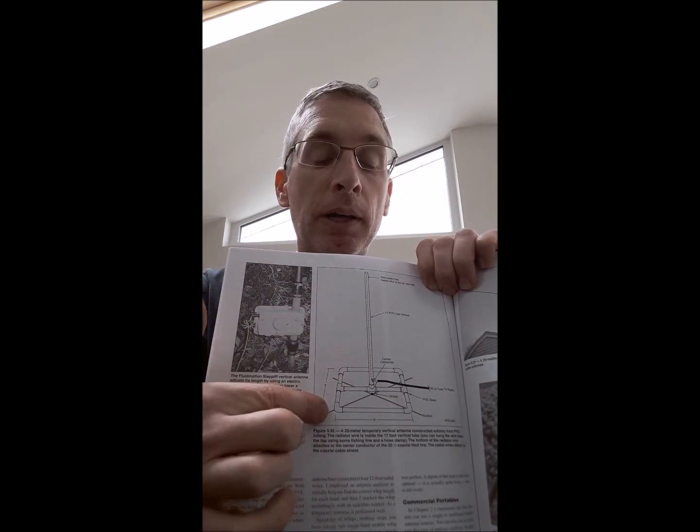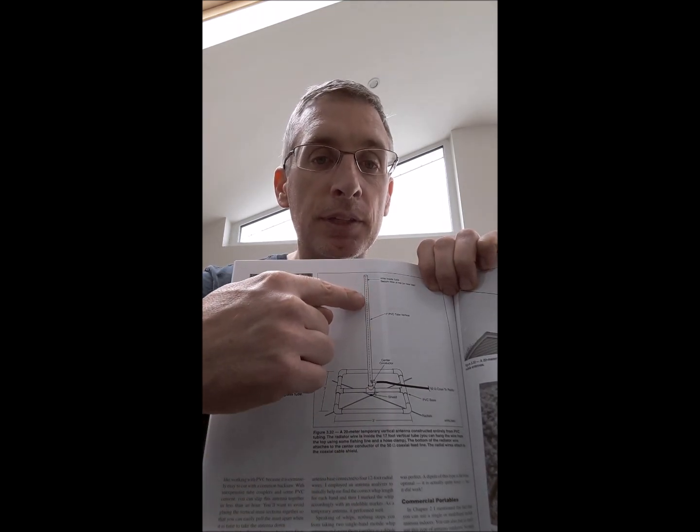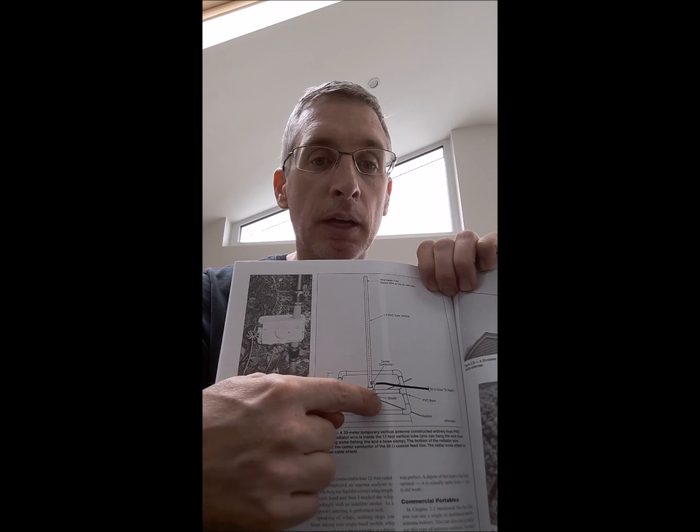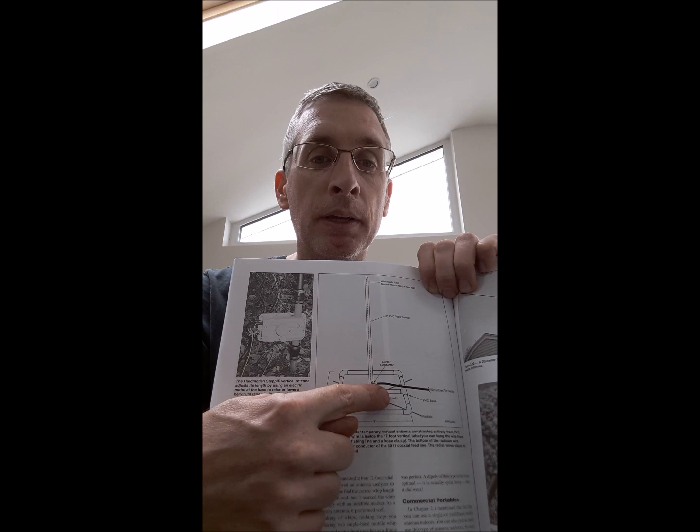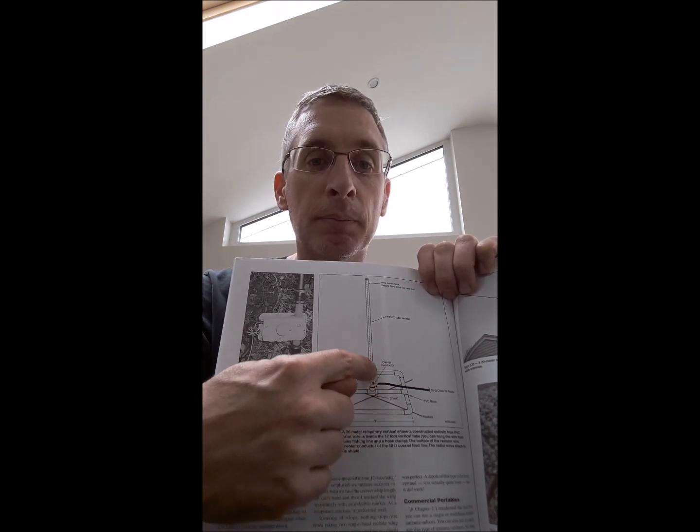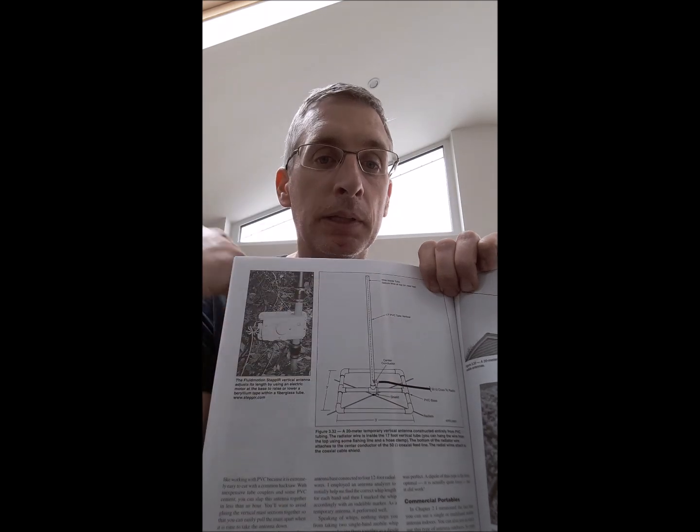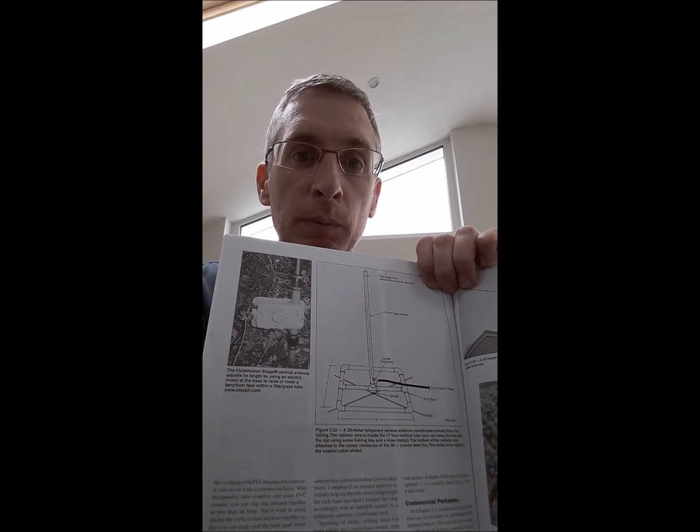So the ARRL design is simply this: they suggest you make it from PVC pipe, like waste water pipe. Pretty much you have the coax coming in, coax shield goes to ground, to the ground radials here. The center part of the coax is suspended up the middle of the pipe, and you can cut it for any band that you want.